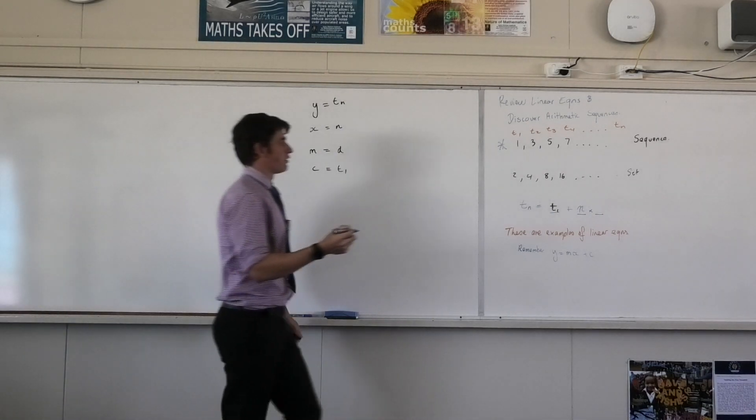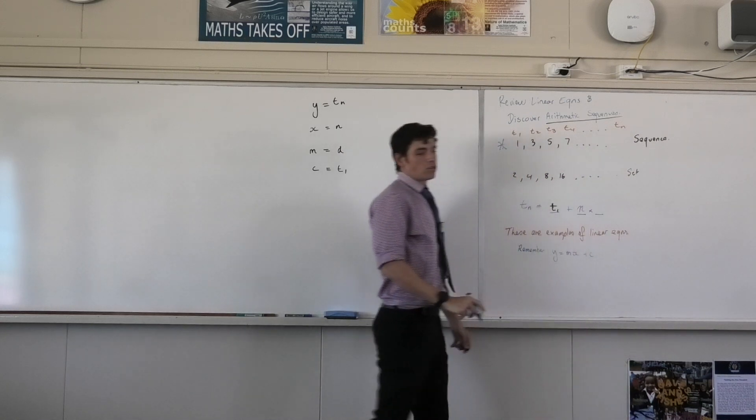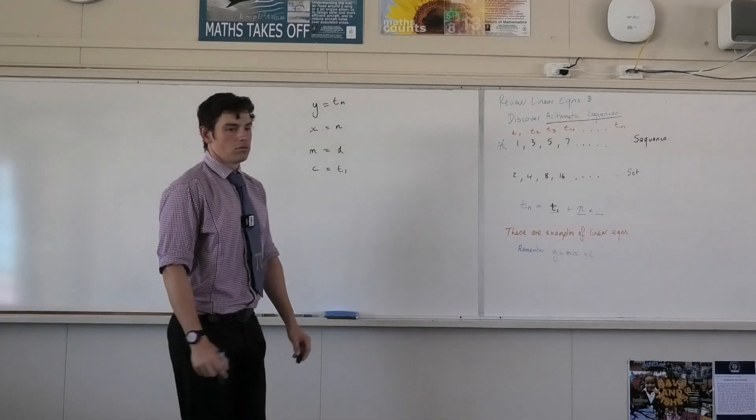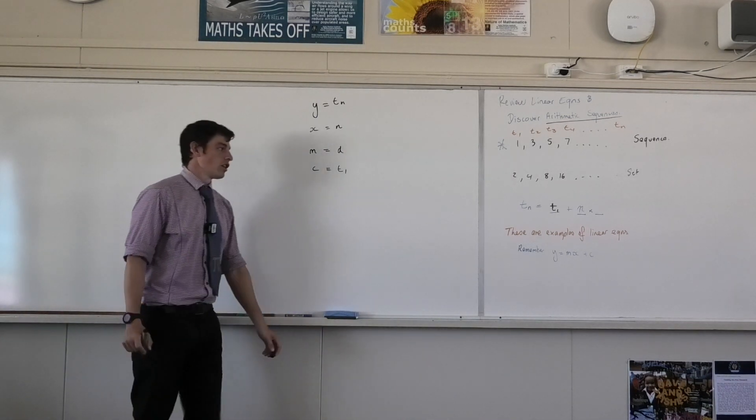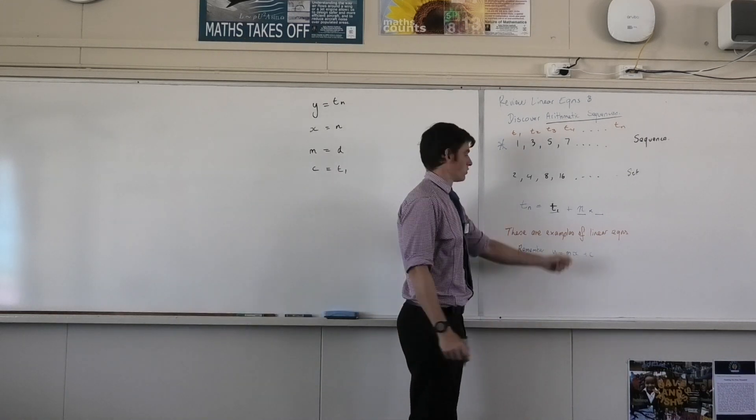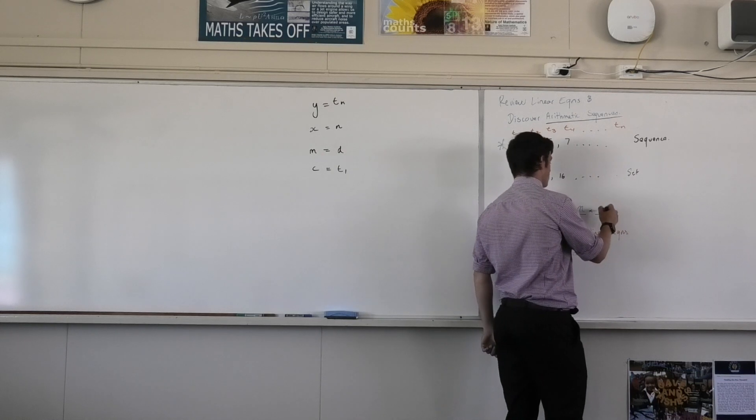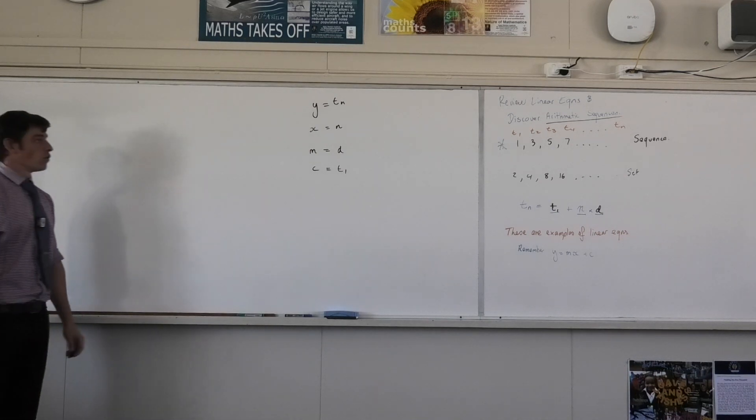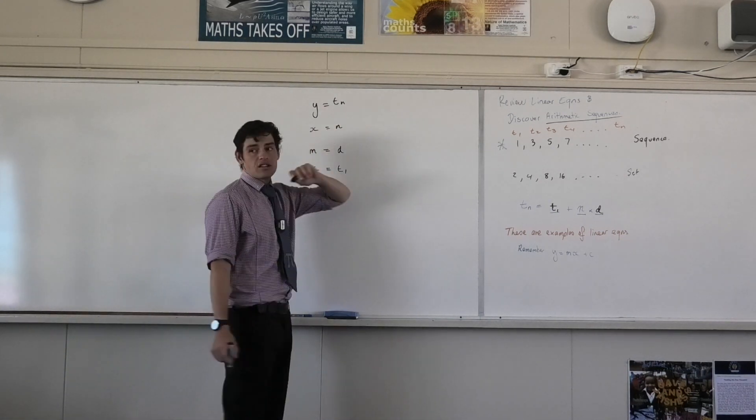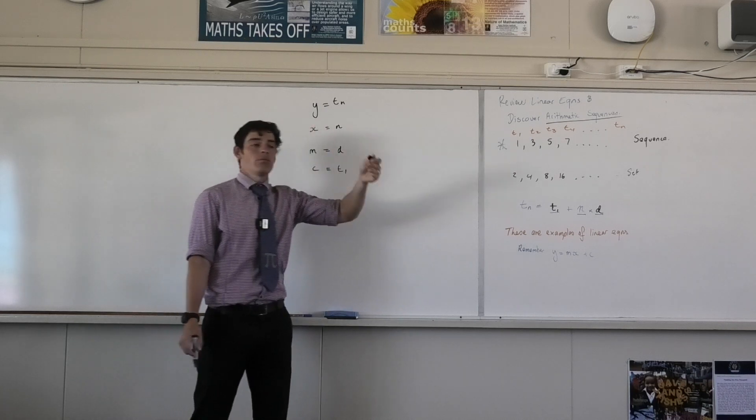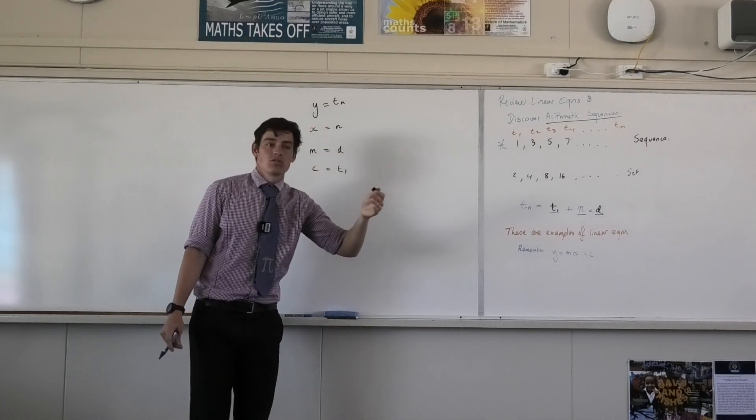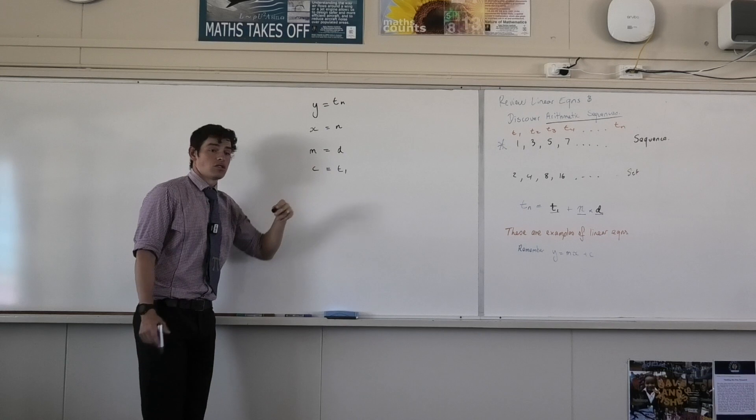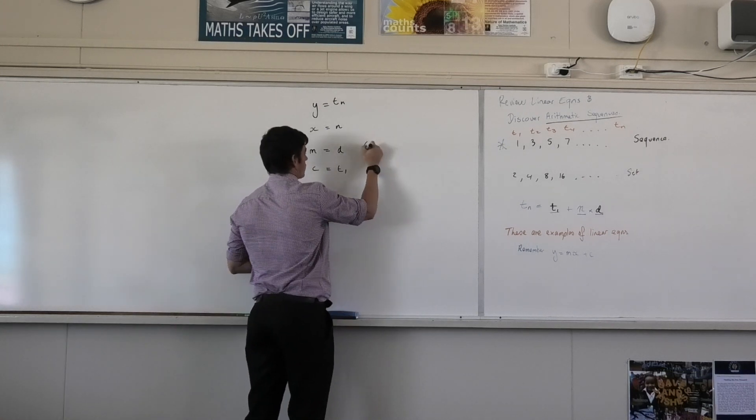So, they give you this fancy word, arithmetic sequence. What they really mean is, a type of linear equation. It's just represented differently. So, what should my equation look like? So, tn equals t1 plus n times d. Which is just the version of y equals mx plus c, where y is represented as tn, our nth term. x is our number of terms, or the term number we're looking for. d is our difference. And c is our first term. I'm going to write those in as well, because I reckon you'll forget it.